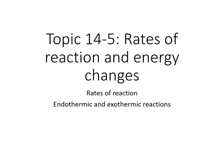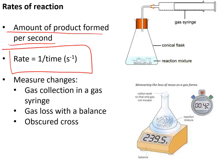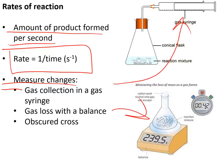Topics 14 to 15: rates of reaction and energy change. The rate of reaction is the amount of product formed every second, and it equals 1 divided by the time the reaction takes. We measure rates of reaction by collecting gas in a gas syringe, measuring the loss of mass as gas bubbles out of a reaction on a balance, or using the obscured cross technique where a reaction gradually clouds over and we time how long it takes to stop being able to see a cross marked underneath a beaker.